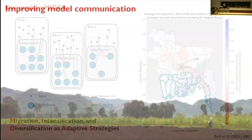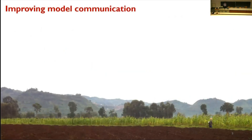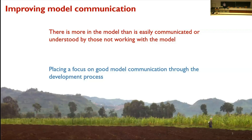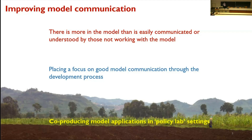One of the challenges we had with that work was we had a nice little paper that was two pages with 85 pages of documentation that no one would ever read. We got stuck with the challenge of not easily being able to communicate what was in our model. This is true for all models but particularly true for agent-based models, with all the different points of articulation. This put a focus for our group on how we can improve model communication through the development process and do a better job of knowledge co-production in a policy lab setting — figuring out how to engage people who wouldn't be building it with us but who could be part of the design thinking.